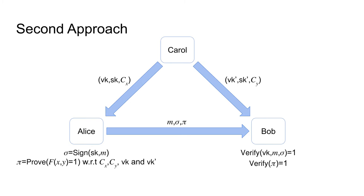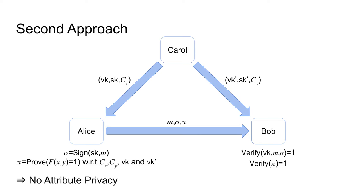A second approach is to let Carol issue signature keys together with a certificate corresponding to the party's attributes. For signature generation, Alice would use her signing key to generate a signature for her message and additionally prove, using both verification keys and certificates, that her attributes together with Bob's attributes fulfill the global policy. When Bob obtains the proof and the signature, he can verify both. However, this solution does not guarantee privacy, since Alice needs to know Bob's attributes to generate the proof, which directly compromises privacy.